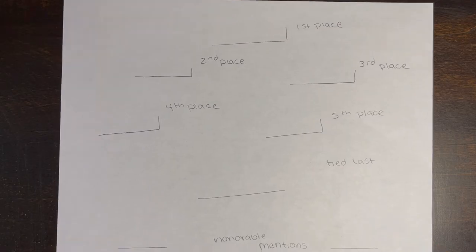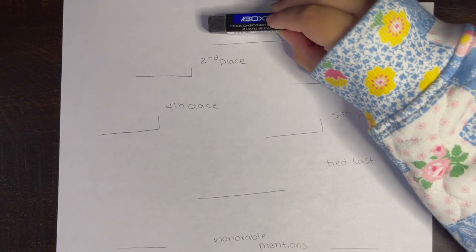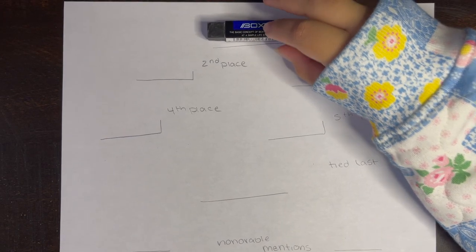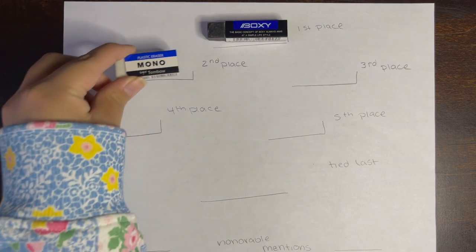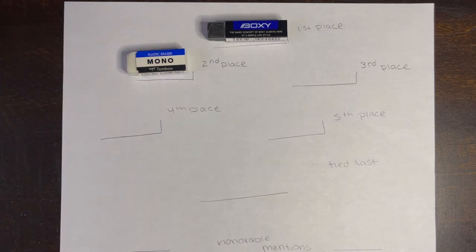So now this is the final. In first place is the Boxy eraser. This is because it is slim, it's black, and it erases so well. It was so soft and it didn't leave a lot of dusting. The Tombow Mono eraser is in second place because it works just like the Boxy except it's white. It's just a small deduction but second place is still really high.